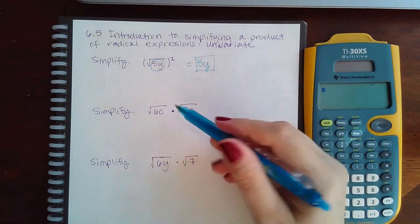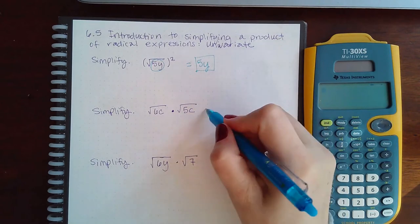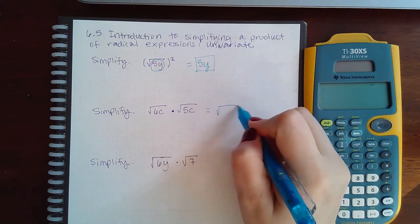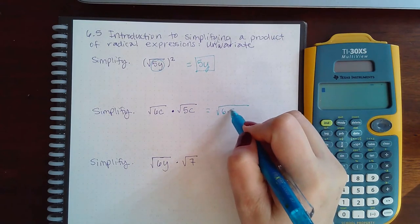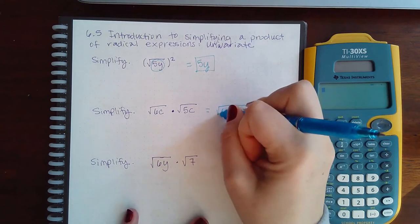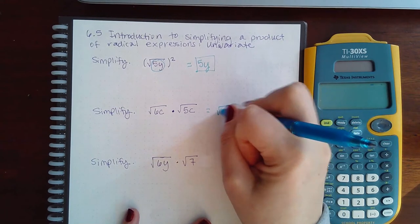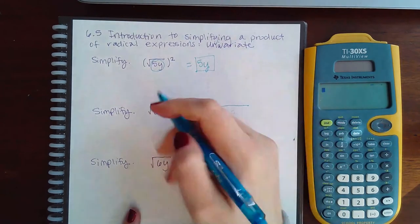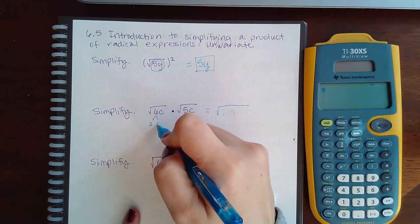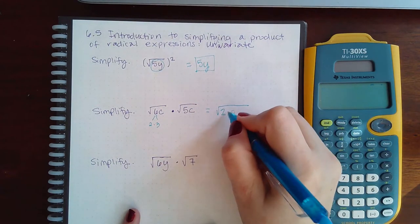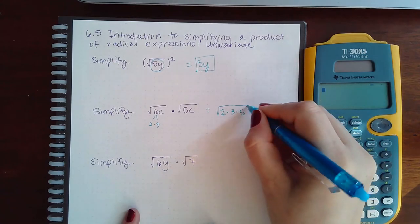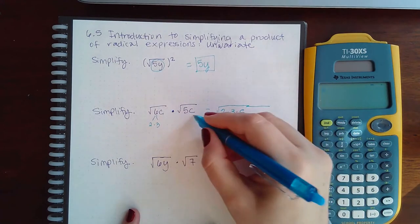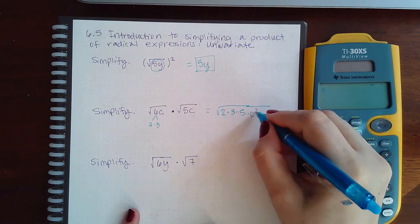Now for this problem, we have to actually multiply the insides together. So we have 6 times 5, and 6 is not in its prime factorization, is it? 6 can actually be broken up into 2 times 3. So I can write 2 times 3 times 5, and then this c times this c will actually give me c squared.